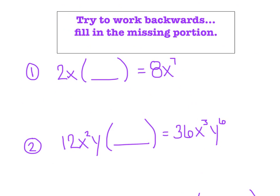This next exercise is by far my favorite — it'll really let you know how well you've mastered this topic. We're going to work backwards by filling in the missing section. We started with a monomial of 2x, multiplied it by a second monomial, and ended up with a product of 8x to the 7th. For the coefficients: 2 times 4 makes 8. For the x's: x to the 1st times x to the 6th makes x to the 7th, since 1 plus 6 equals 7.